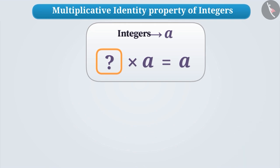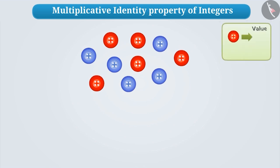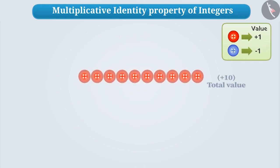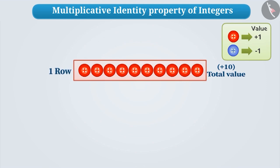That number is 1. Let's understand this. Suppose we take some red and blue buttons. Consider the value of a red button as plus 1 and blue button as minus 1. If we take 10 red buttons and arrange them in a row, then its value can be found like this: 1 into 10, which is 10.